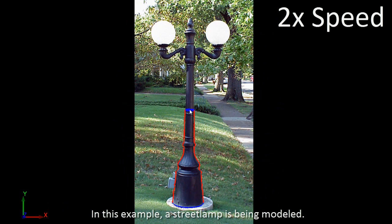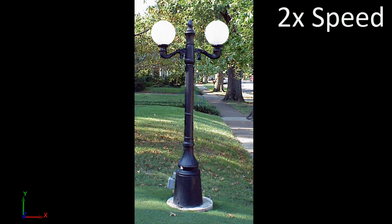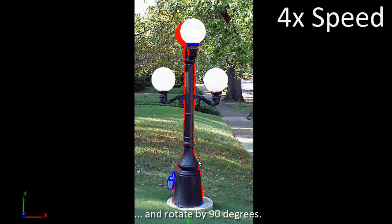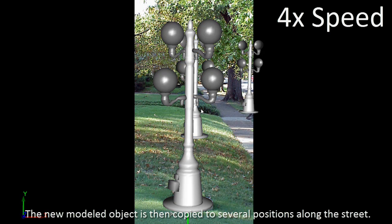In this example, a street lamp is being modeled. Then we copy the lamps to a lower position along the pillar and rotate by 90 degrees. The new modeled object is then copied to several positions along the street.